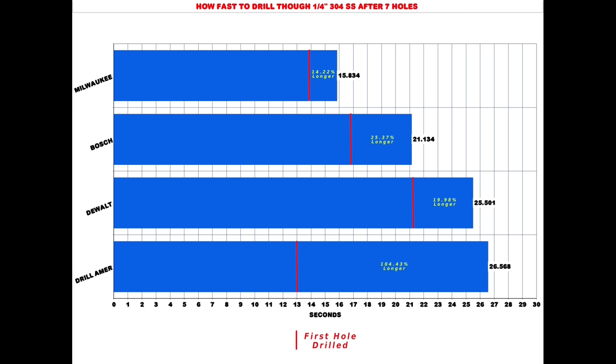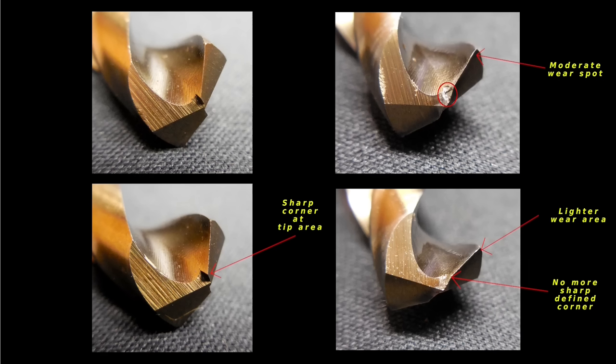So the least amount of wear took place by the Milwaukee, followed by the DeWalt, then the Bosch, and last place, Drill America. Now we're going to take a look at each one of the drill bit tips to see what they looked like before the drilling took place and after the seventh hole. Now you're going to understand why the Drill America bit took so much longer to drill the seventh hole.